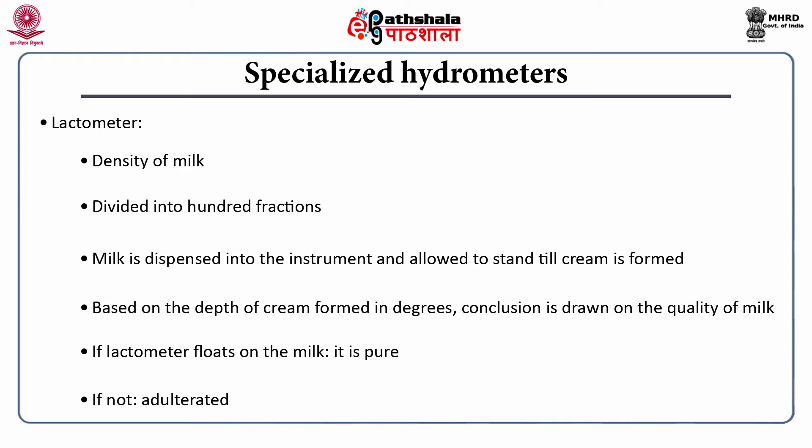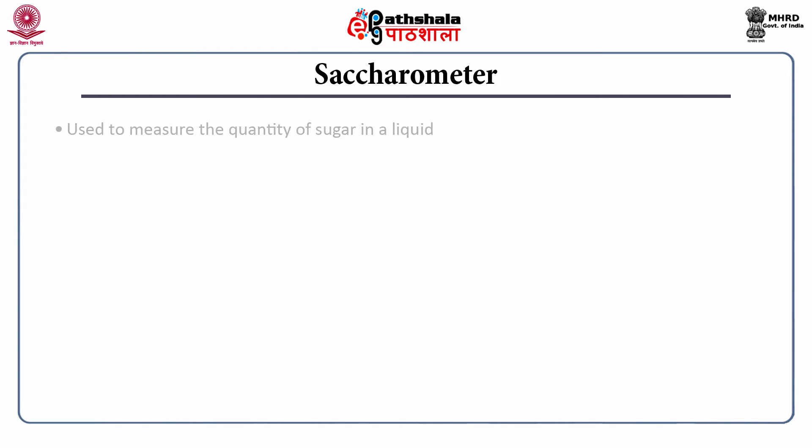One important thing to understand is that temperature plays a very important role in hydrometer calculations and readings. All procedures need to be performed at a particular temperature. A saccharometer is used to measure the quantity of sugar in a liquid. As the sugar content changes, the specific gravity or the density of the liquid also changes — depending upon the sugar content available in, say, honey, you would see its specific gravity changing.